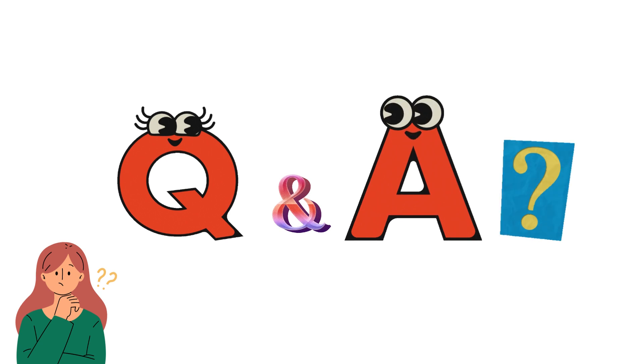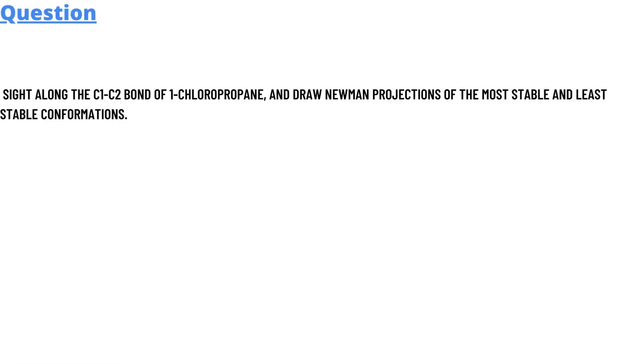So our today's question is sight along the C1-C2 bond of 1-chloropropane and draw Newman projections of the most stable and least stable conformations.